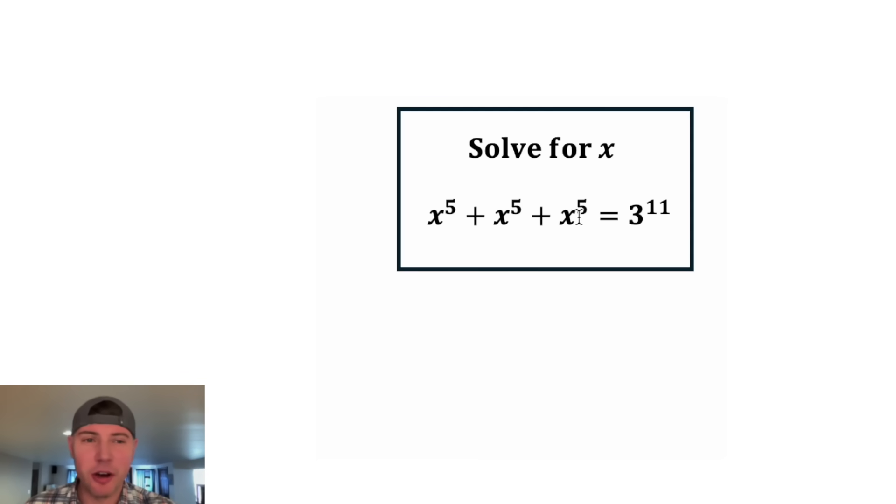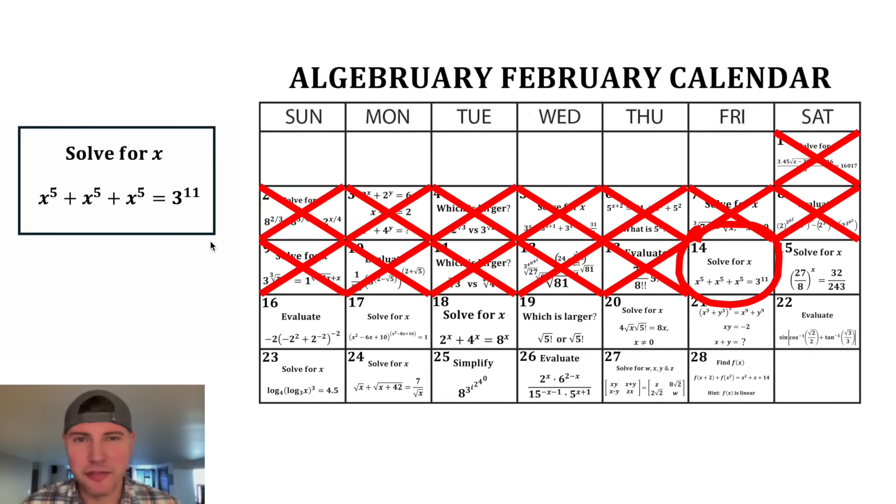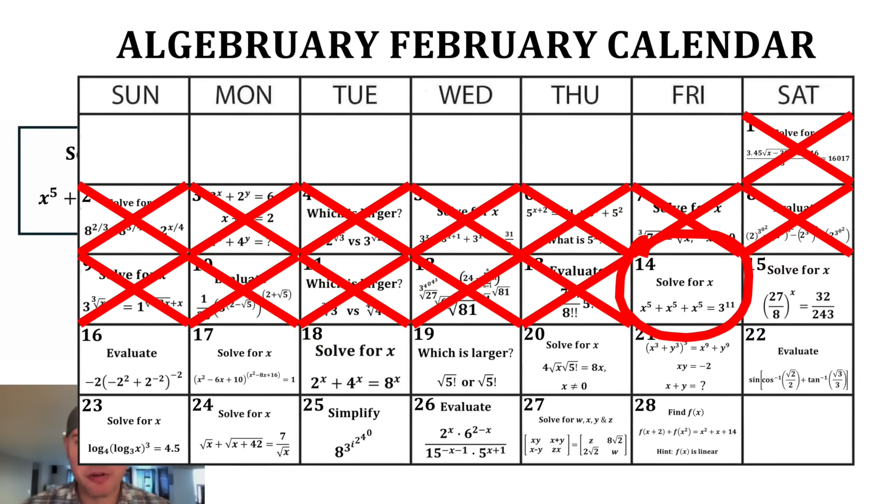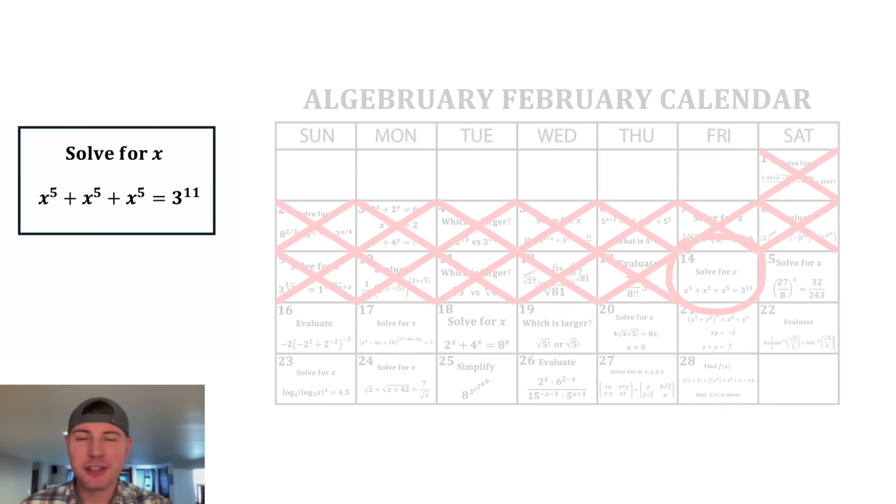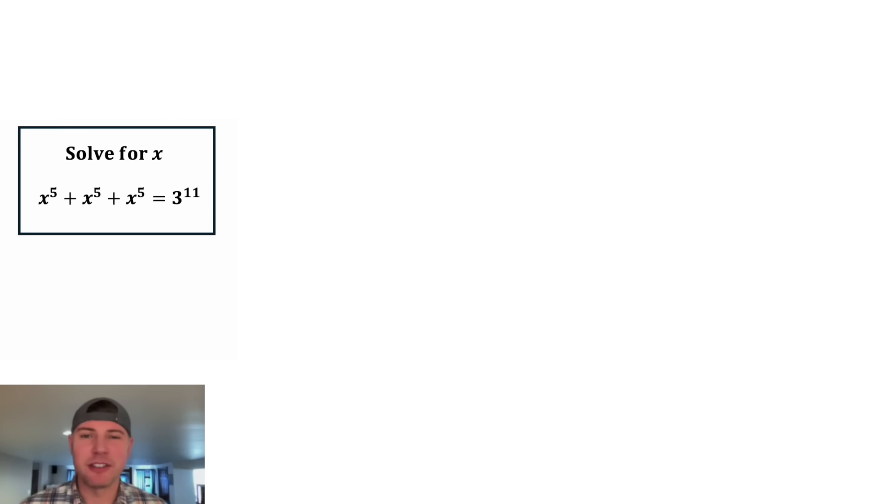Hey guys, this looks like a fun one. It says solve for x and we're given x to the 5th plus x to the 5th plus x to the 5th equals 3 to the 11th. This is day 14 of our Algebra February calendar. For the month of February we're going to solve 28 Algebra problems. If you want to try this one, pause it right now because I'm going to solve it in 3, 2, 1.